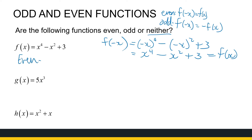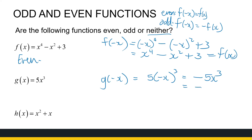Let's look at g of x equals 5x cubed. If I look at g of minus x, it's 5 times minus x cubed, which is minus 5x cubed, which is minus g of x. So this function is odd.